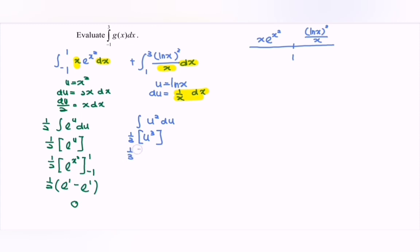Substitute the u. So we have 1 over 3 bracket, we have ln x bracket power 3, with the values 3 and 1. So if we substitute, we have 1 over 3 bracket ln 3 bracket power 3. Minus, we have ln 1 power 3.